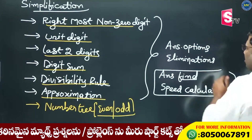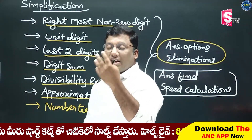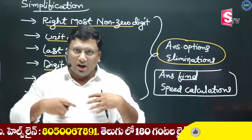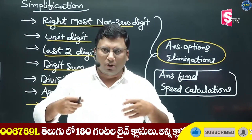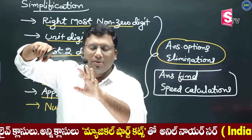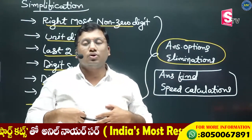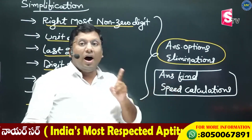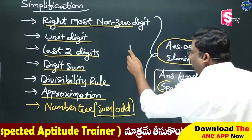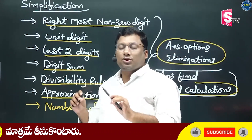This is the answer option elimination. If I have the answer option, I use it. If I don't have the answer option, I proceed differently. Even if I go through the right approach, I will try to find out what I need to do with speed calculation — it is very important.